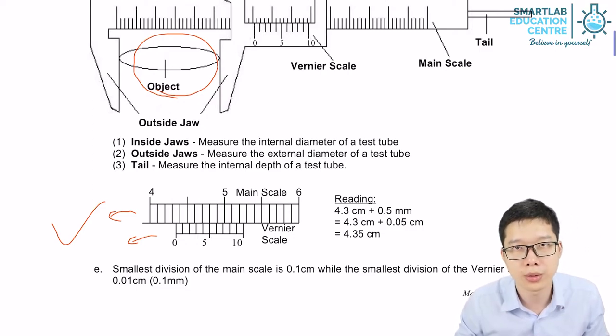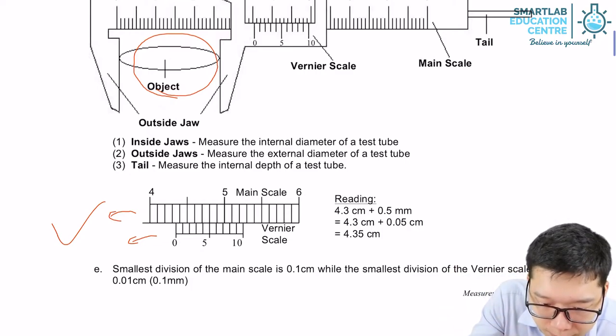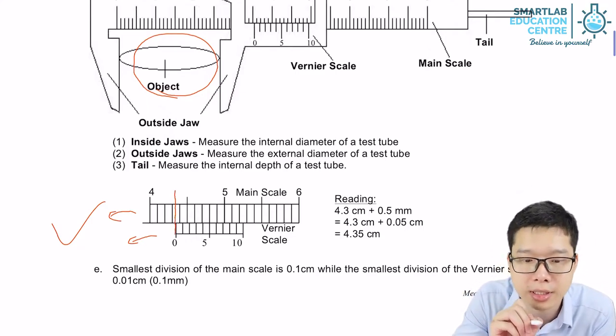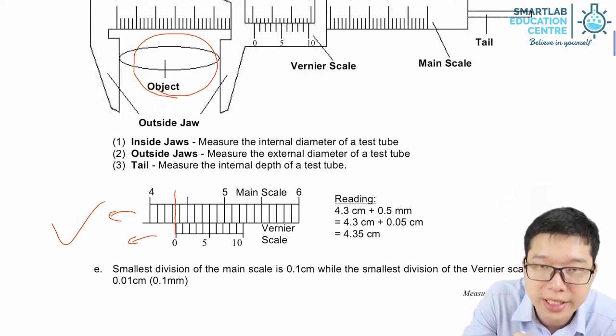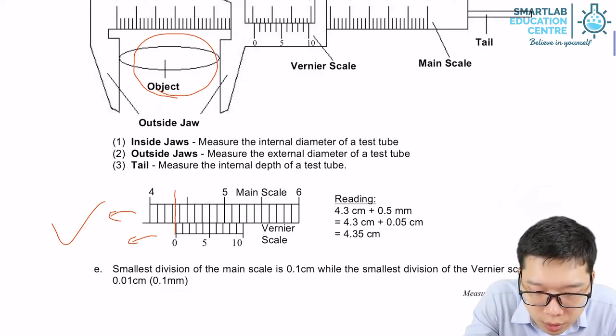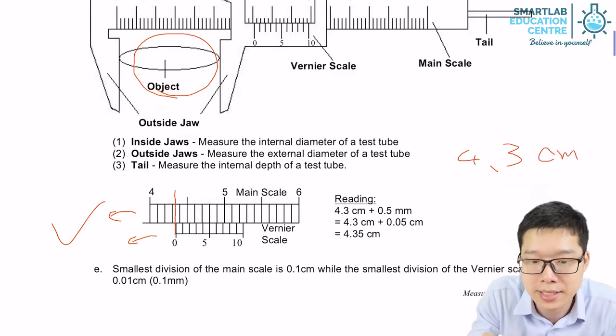How are we going to use these two scales to get our final reading? First, look at the starting point of the vernier scale. You can read it as a normal ruler. If this is 4, 4.1, 4.2, 4.3, you have 4.3 cm from your main scale.